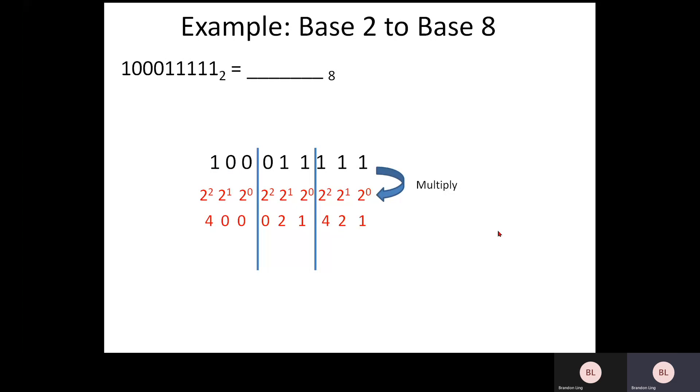So the next step will be you add each bar numbers together. When you have 4, 2, 1, it becomes a 7. This becomes a 3. And this becomes a 4.